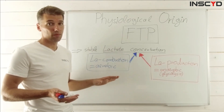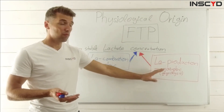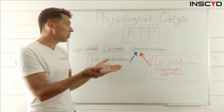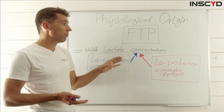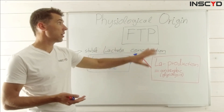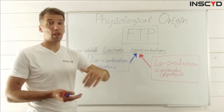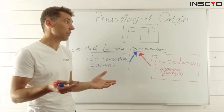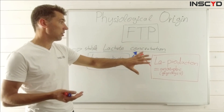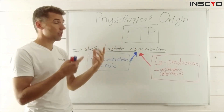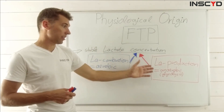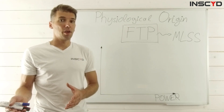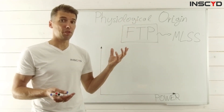Lactate is combusted — or burned — in the aerobic metabolism. To burn anything you always need oxygen, so you need the aerobic system to combust lactate. These two factors — how much lactate is produced and how much is combusted — create the concentration. They determine whether lactate concentration stays stable, meaning you are at or below FTP, or whether lactate concentration increases as a marker of fatigue leading to exhaustion, meaning you are above FTP.